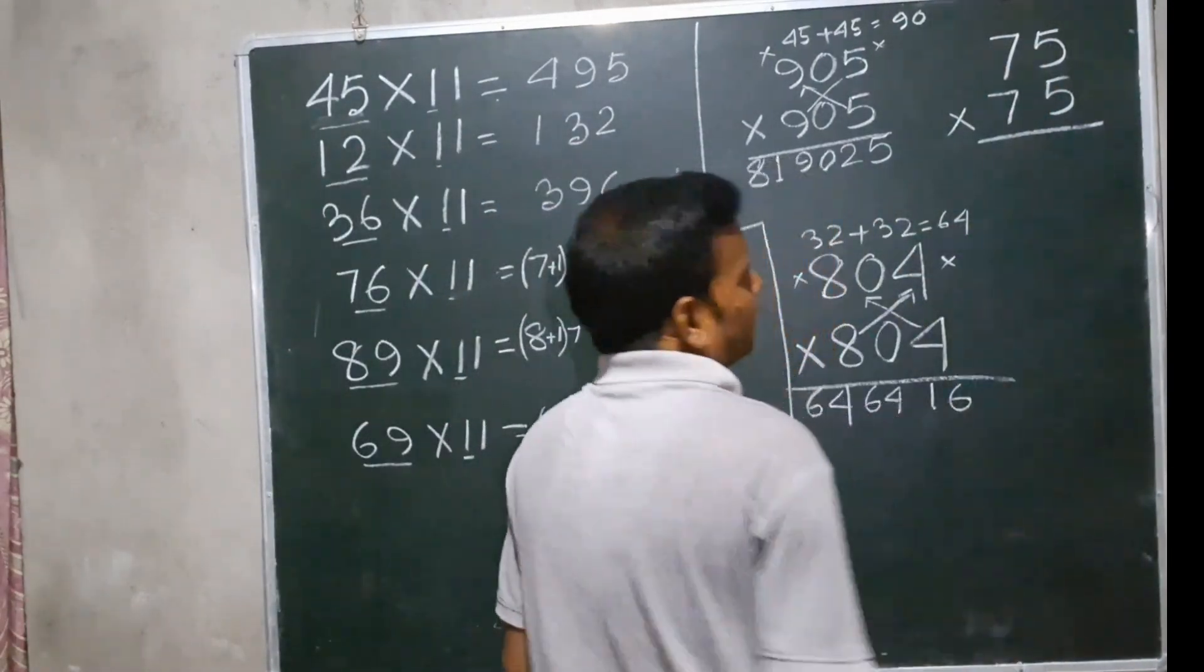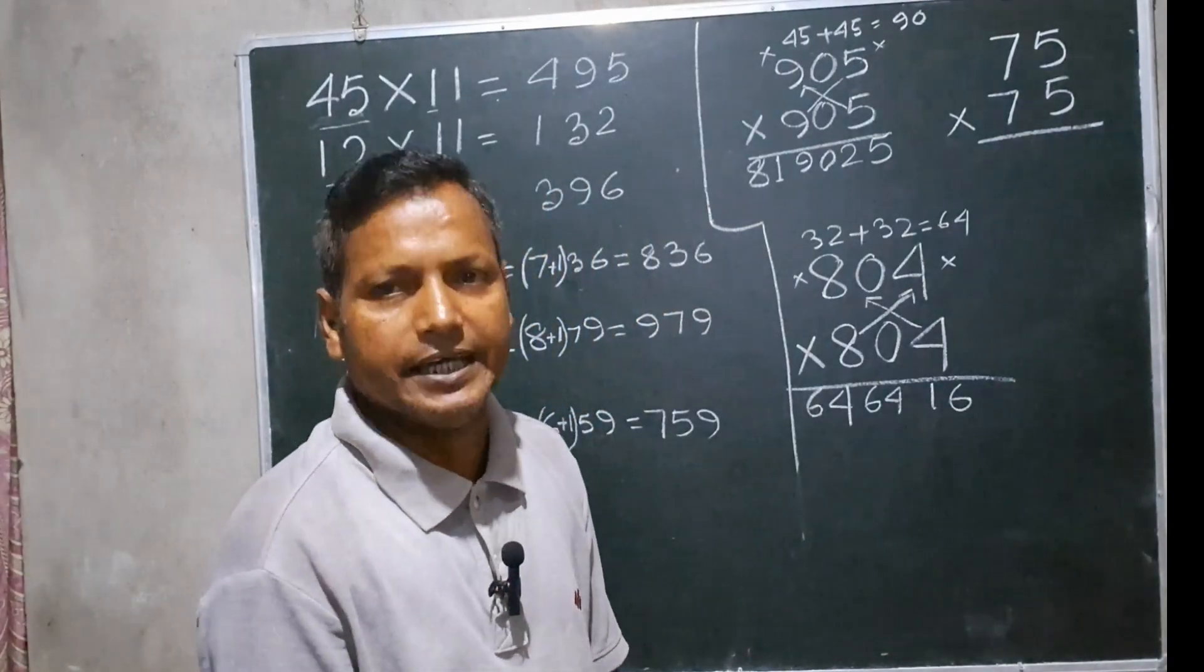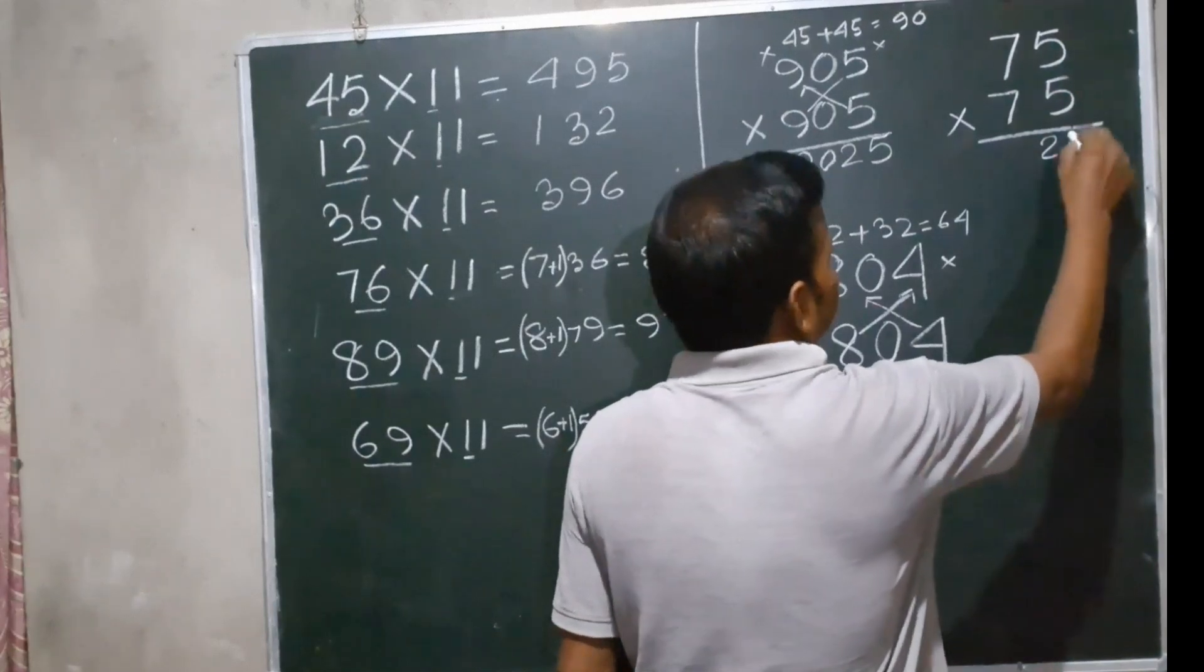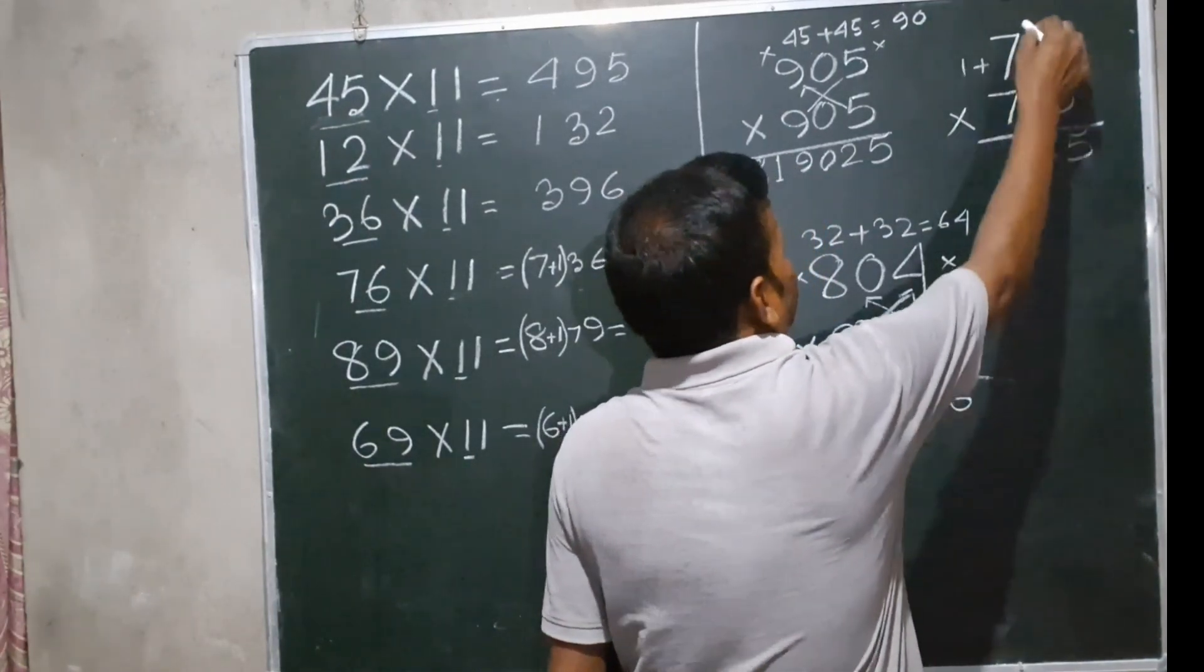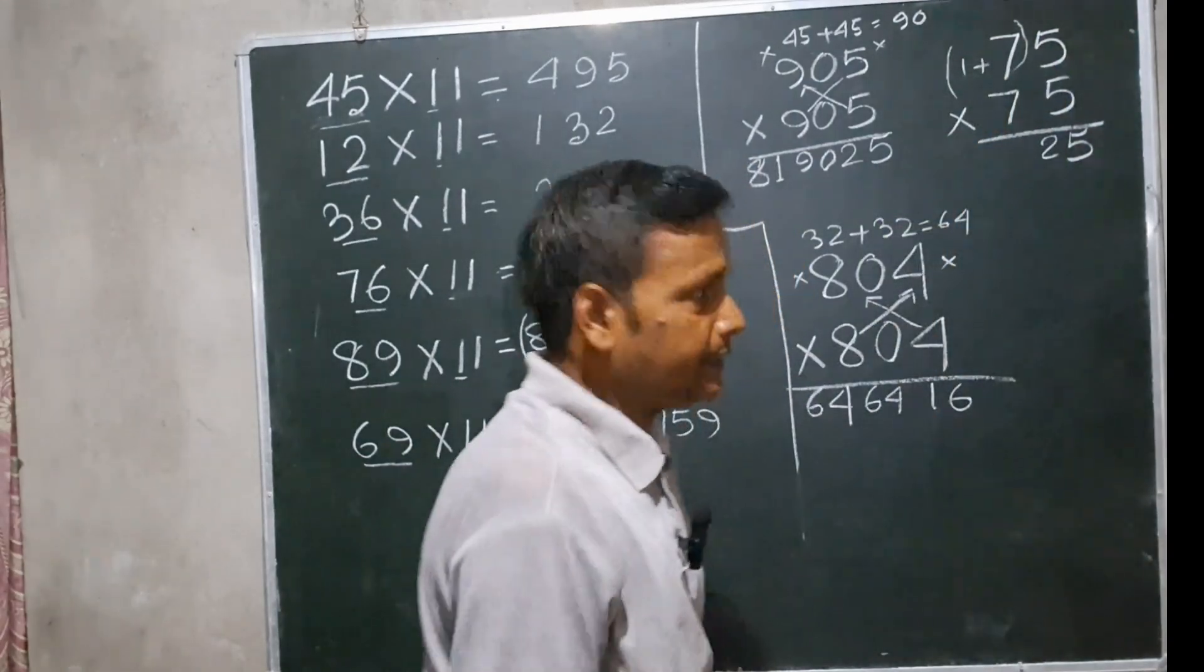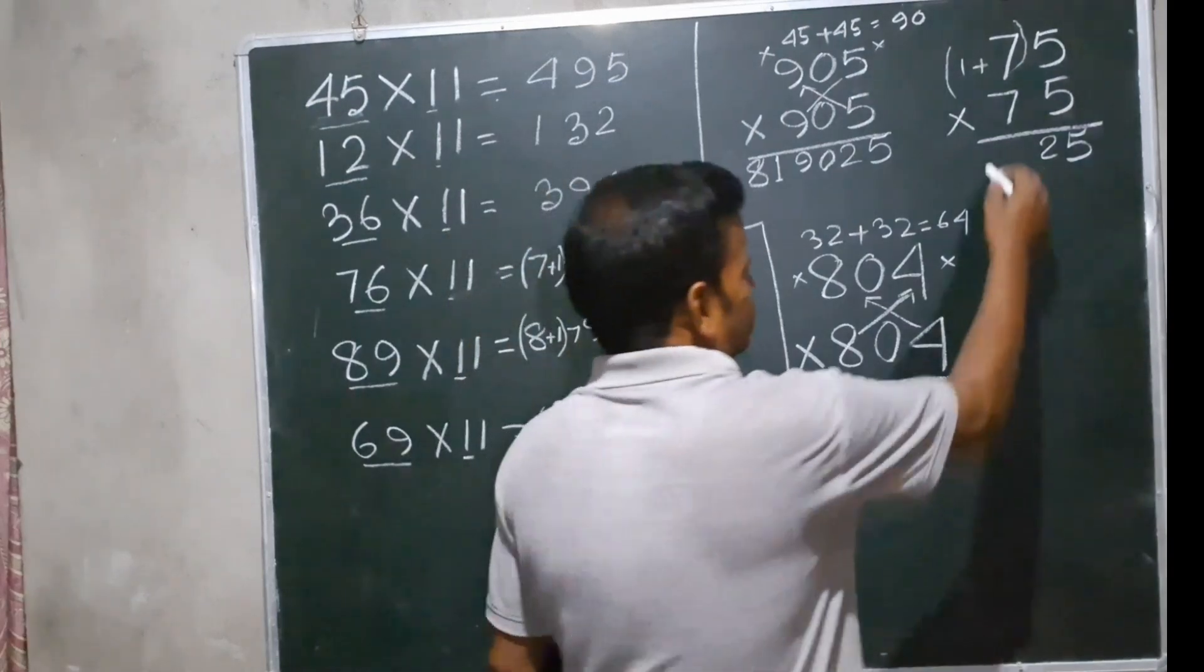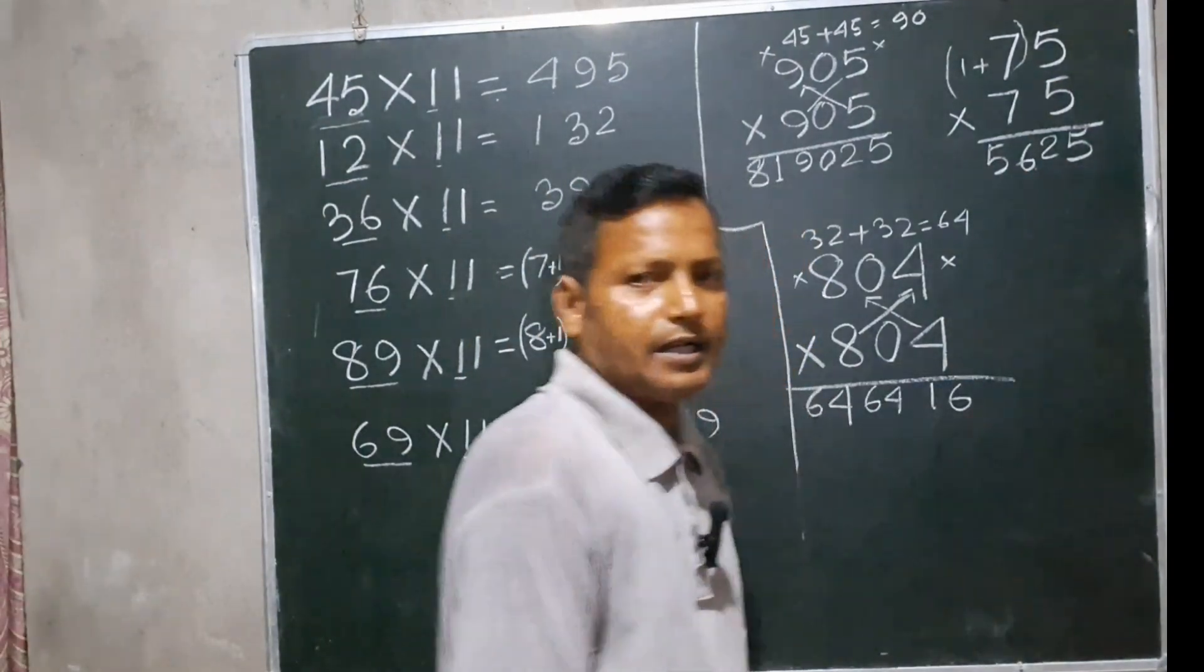This is different: 75 multiplied by itself, 75 into 75. 5 times 5 equals 25. Now we multiply 7 plus 1 equals 8. 8 times 7 equals 56. The answer is 5,625.